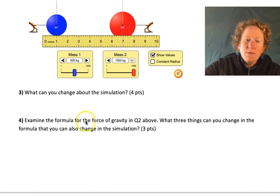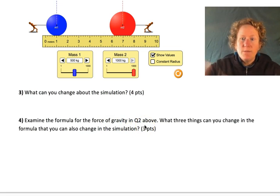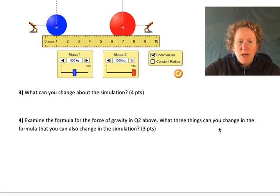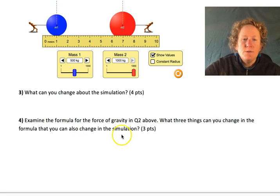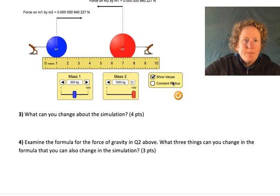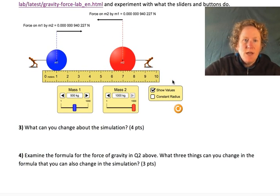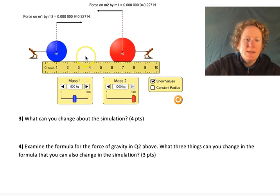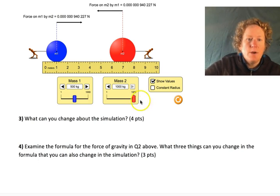We can look at the formula for the force of gravity that we found in question two that was in the TED video, and we have to think about what three things can we change in the formula that you can also change in the simulation. Well, we talked about the masses, we talked about the distance here you can change that, and we also talked about the fact that if you change the mass and the distance, you're going to change this big F on the left-hand side of the equation.